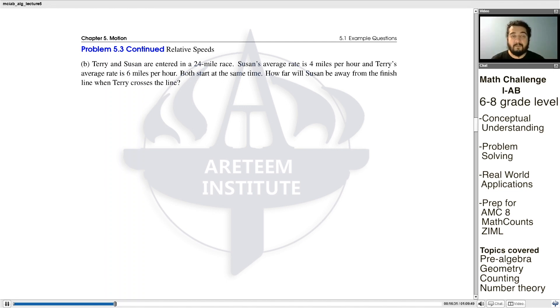One thing you want to notice first is that, indeed, this makes sense. Terry is traveling faster than Susan, so Terry will get there before Susan to the finish line.